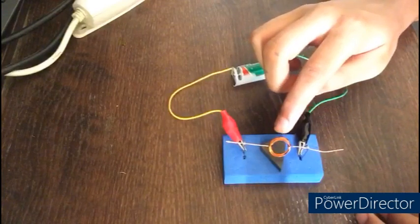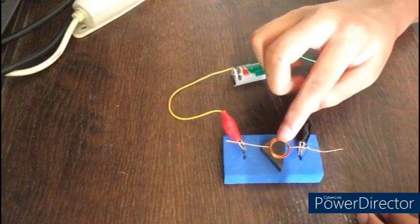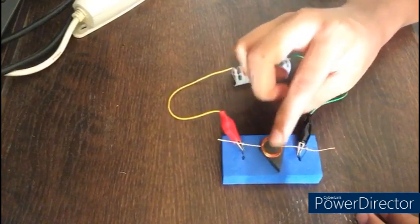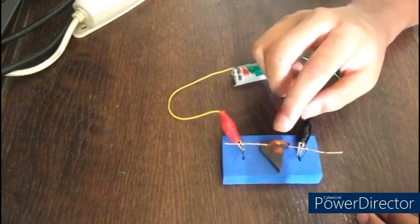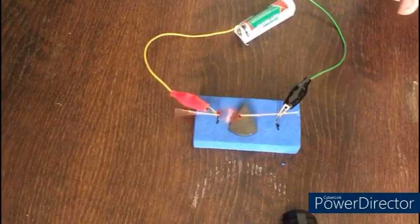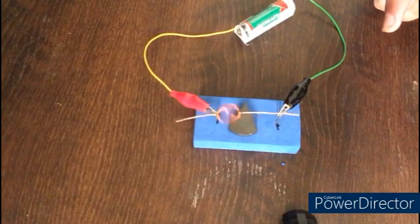Now, give two to three times initial push to change the copper coil's inertia of rest. After giving the inertia of rest, we can see that the copper coil is moving smoothly.